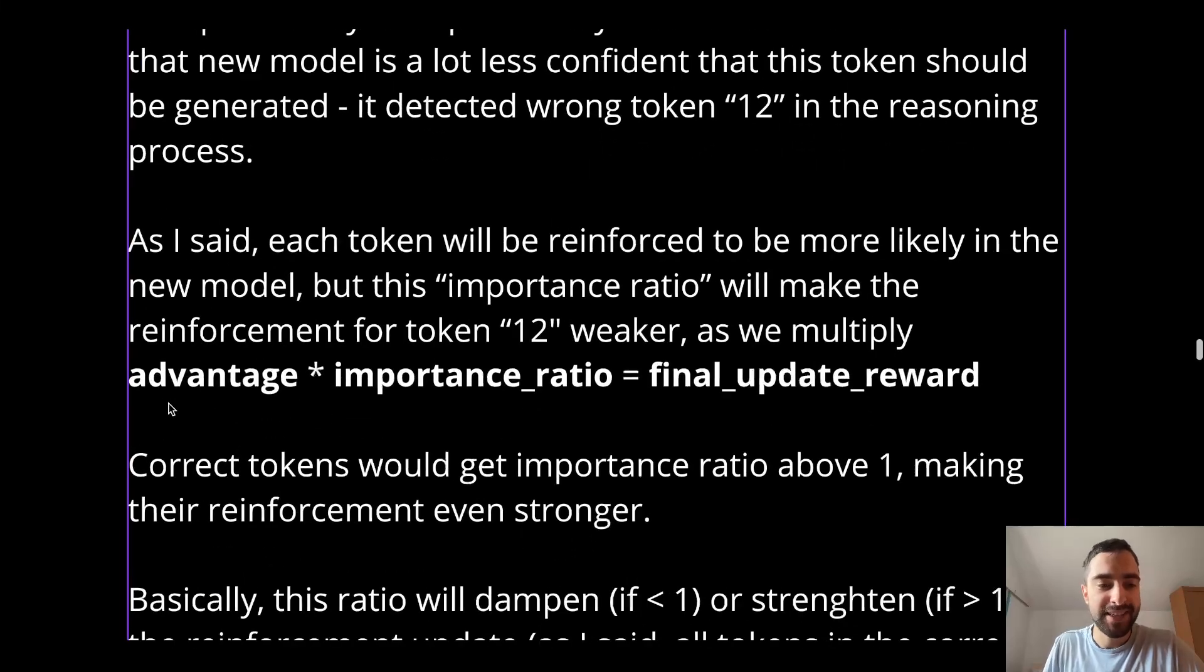And then what we do is, as you remember, we have this advantage for the entire answer. It's same for every token. And then for every token separately, we have this importance ratio. It's how confident the new model is that this token should be there, that this token is good. So then we calculate update or reward for each token separately. Now remember, if the answer is correct, advantage will be positive. So every token will be rewarded. But the weird tokens can get rewarded less. And if the advantage is negative, if the answer is wrong, then we will just have negative rewards or punishments for every token individually scaled by the importance ratio.